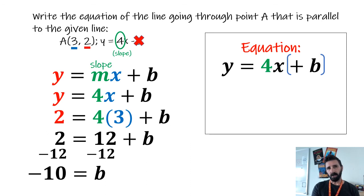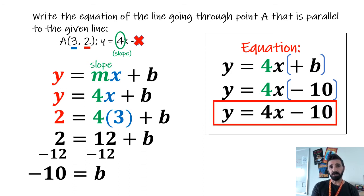And so on the right-hand side here, we have our equation already started. All we have to do is put that negative 10 in for the b value, and that is our equation, y equals 4x minus 10. So that's how you solve for the equations of lines that are parallel using the slope-intercept form.